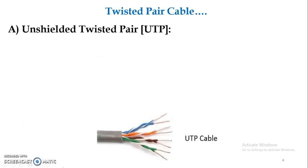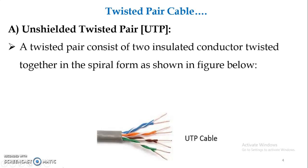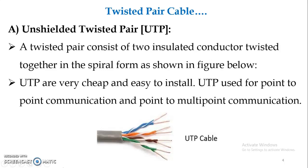First, consider the unshielded twisted pair cable. A twisted pair consists of two insulated conductors twisted together in the form of a spiral, as shown in the figure. You can observe the spiral structure of the UTP. Unshielded twisted pair cables are very cheap and easy to install. UTP is used for point-to-point communication as well as point-to-multipoint communication.